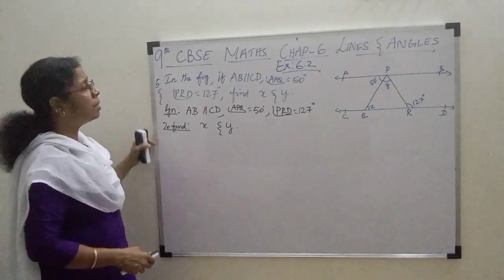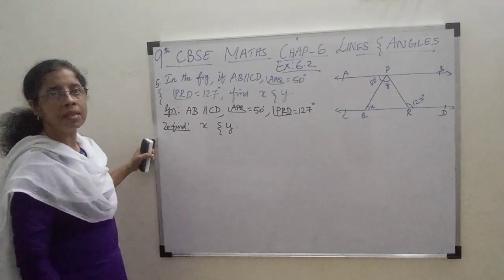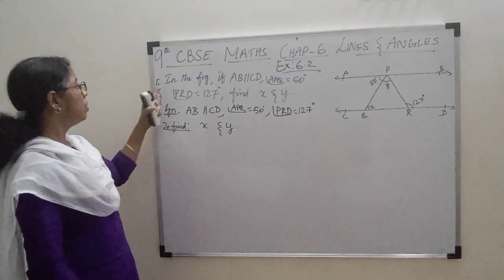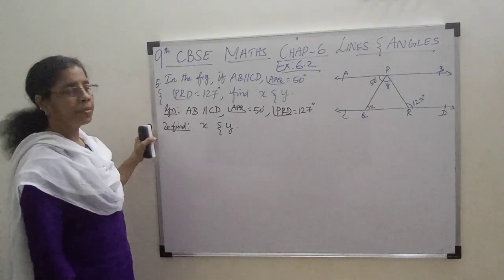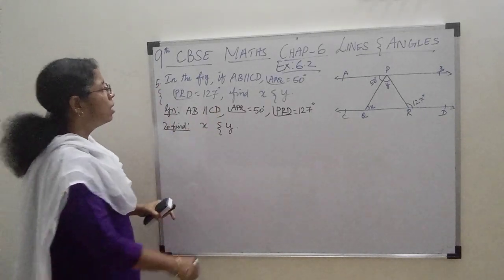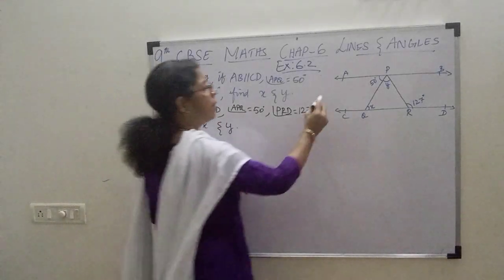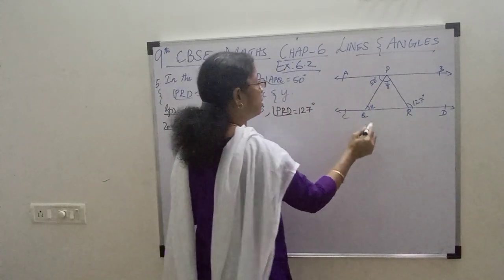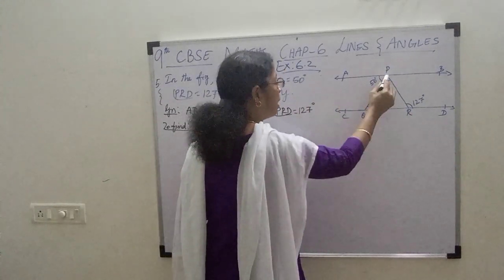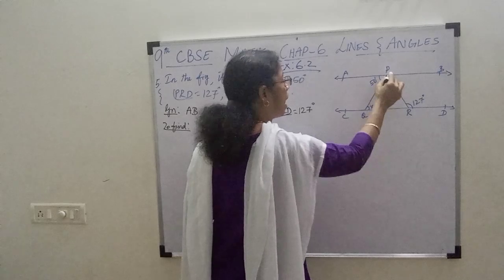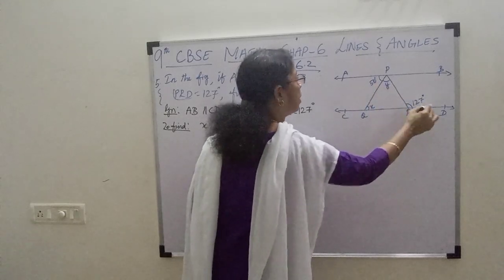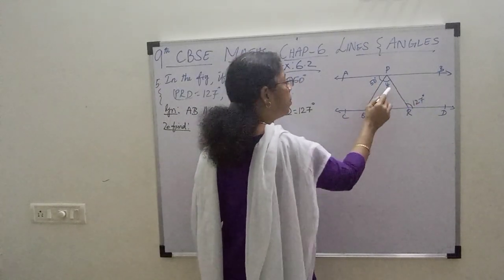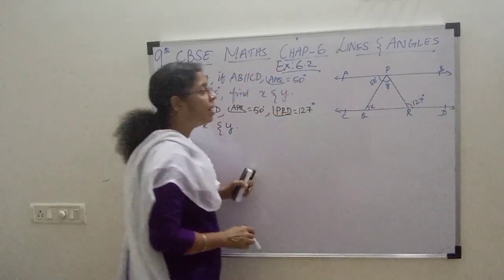Now, 9th CBSE GAC Chapter 6. You are seeing Exercise 6.2. In the figure, if AB is parallel to CD, angle APQ is 50 degrees, and angle PRD is equal to 137 degrees, then you are supposed to find out angle X and Y.